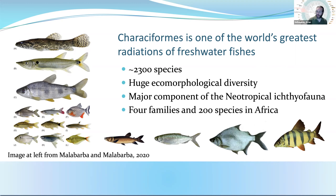Characiformes — and in particular one of its suborders, Characoidei — forms one of the biggest components of the neotropical ichthyofauna, which is itself the greatest freshwater diversity of fishes that exists anywhere on the planet. Characiformes have figured out how to inhabit and exist in just about any type of life history or niche that fishes occupy. They range from long snaggletooth predators to very small-bodied insectivores, herbivores both large and small, deep bodies, thin bodies, top and bottom of the water column — there's a Characiform fish that has probably invaded that ecological niche.